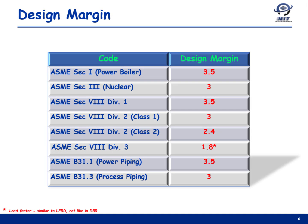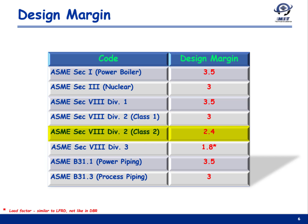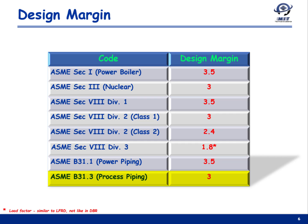Listed here are the current design margins for some ASME BPVC and piping codes. For Section 1 (power boilers), the design margin is 3.5. For nuclear Section 3 codes, it is currently 3. For Section 8 Division 1, it is 3.5; for Division 2 Class 1, it is 3; for Class 2, it is 2.4; and for Division 3, it is 1.8. For power piping B31.1, it is 3.5, and for B31.3, it is currently 3.